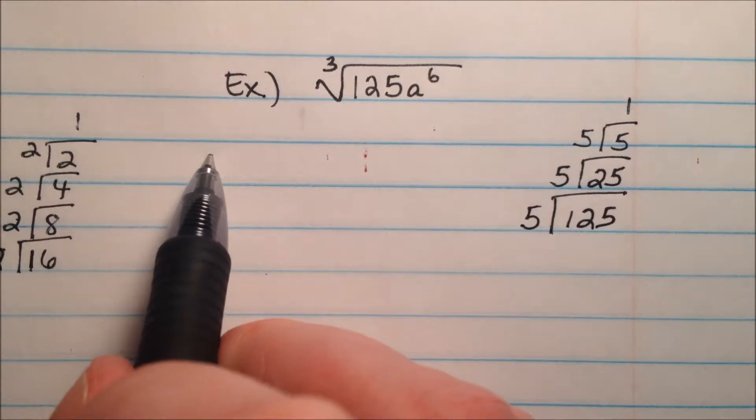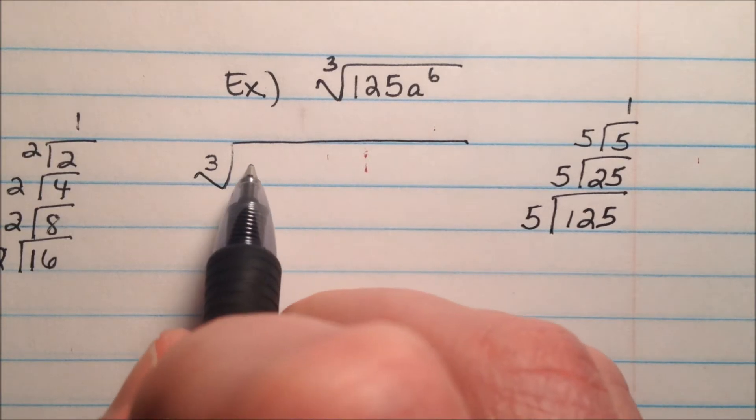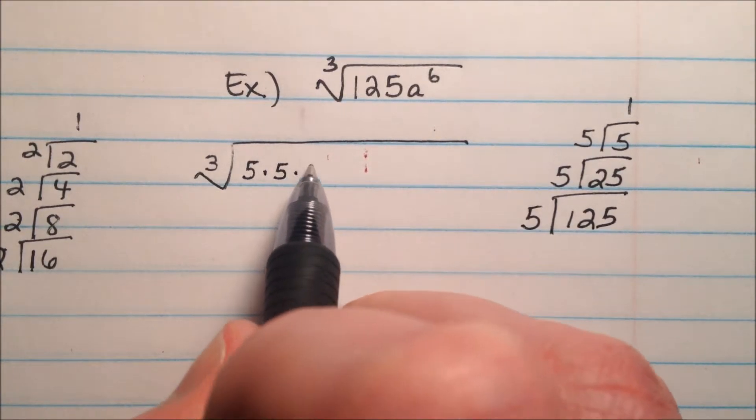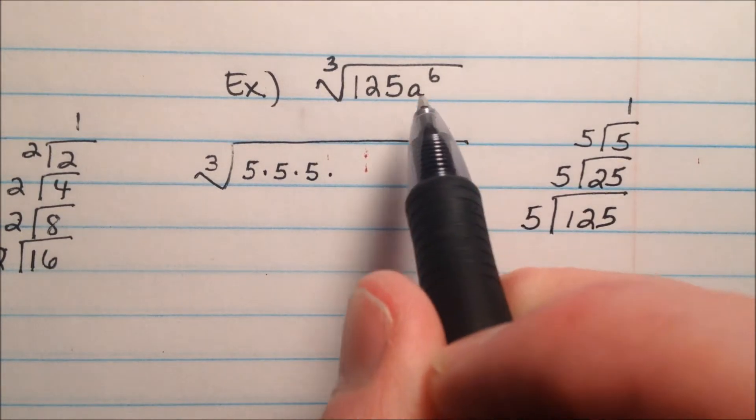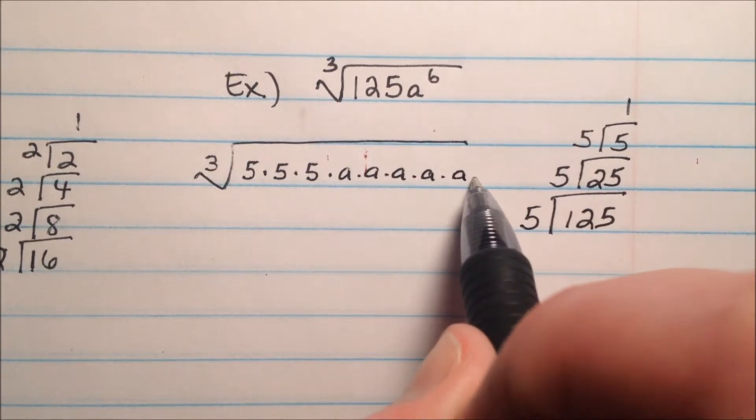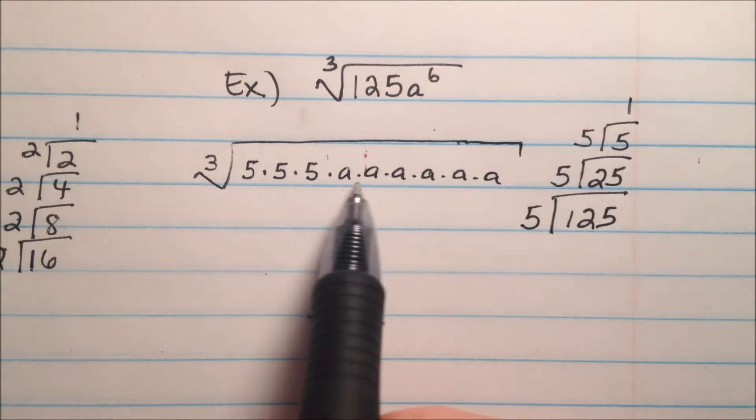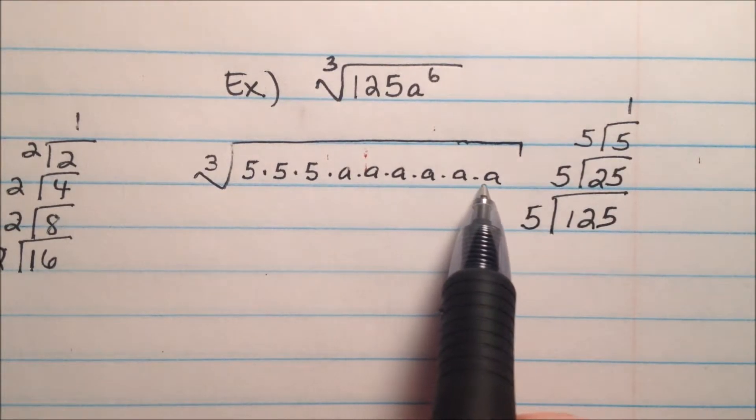So I can rewrite this now as the cubed root of a whole big thing. It'll be 5 times 5 times 5, and we have 6 a's. So 1, 2, 3, 4, 5, 6. And I'll be discussing a little bit later a different way, so you don't have to write these variables out every single time.